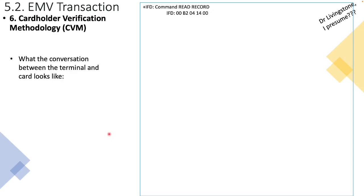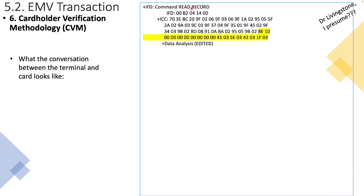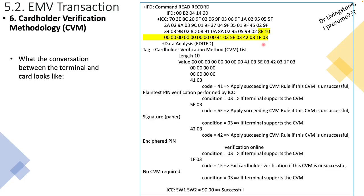Looking at the conversation between the terminal and card: the terminal sends a read record, the card responds, and in the response you can see tag 8E with a whole string of data. Depending on what toolset you're using, most tools will give you a data analysis function that breaks this hex string down into readable English — you can see plain text PIN, signature, enciphered, no CVM, et cetera, with the code and conditions included.